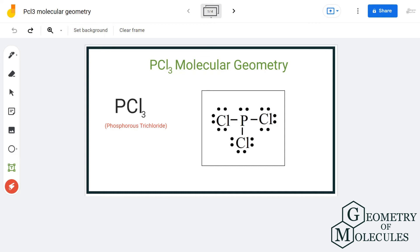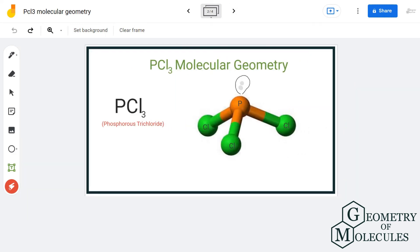If we look at the 3D structure of this molecule, we can see that all 3 Phosphorus-Chlorine bonds are pushed downwards due to the repulsion exerted by the lone pair of electrons.